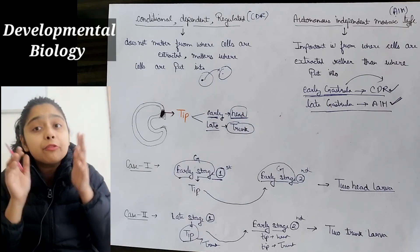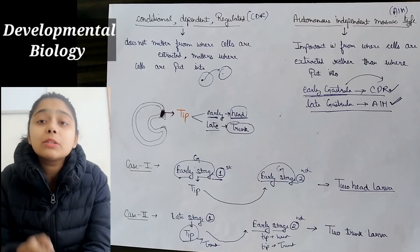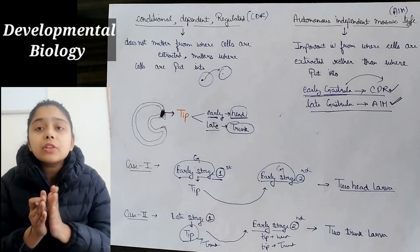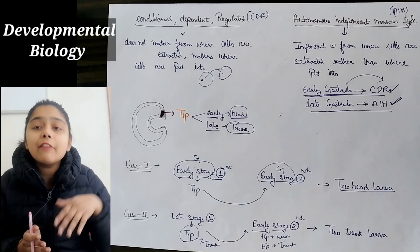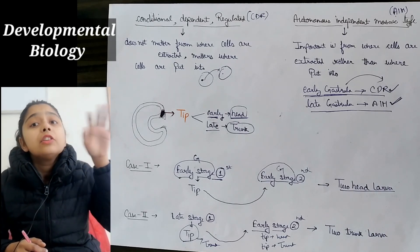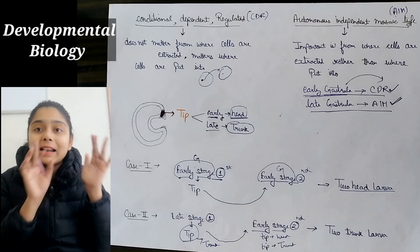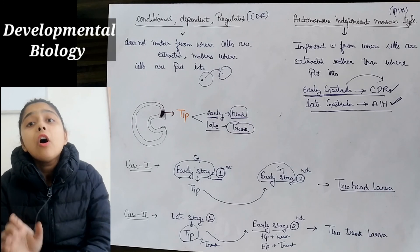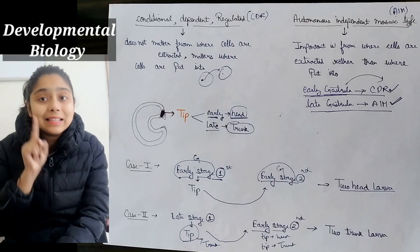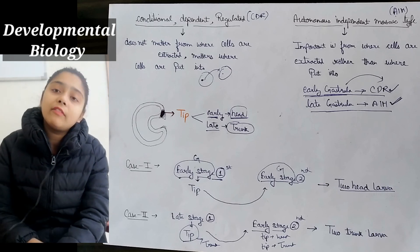In developmental biology, there are typically two types of questions from the amphibian topic: one on mesoderm or ectoderm differentiation and gastrulation from the previous video, and one on these special cases involving CDR and AIM cells covered today. Keep these concepts clear and you will be able to solve those questions easily. Best of luck!